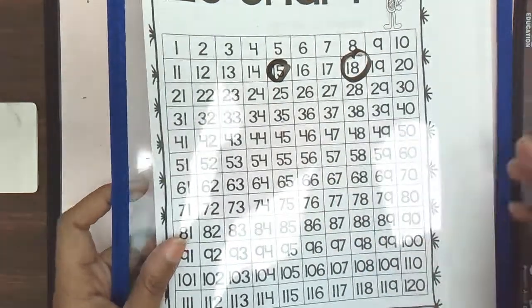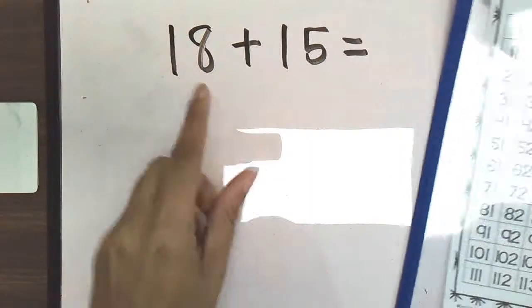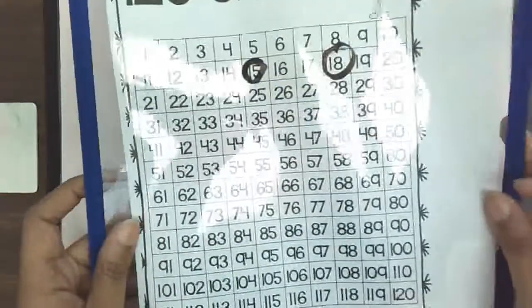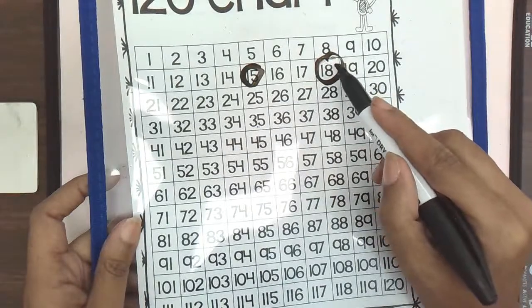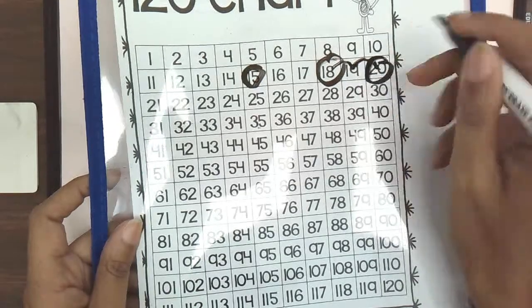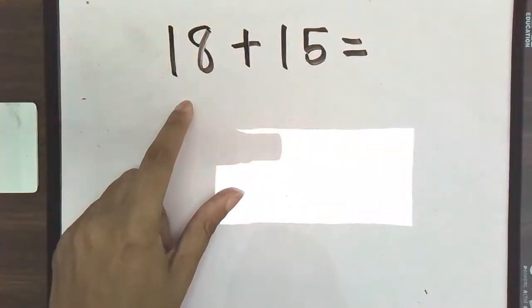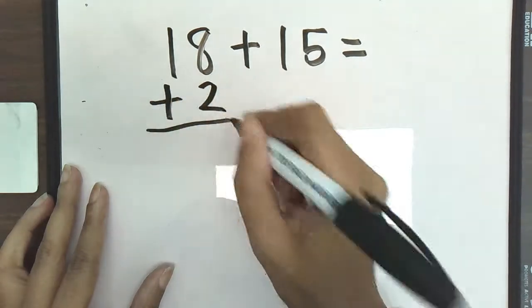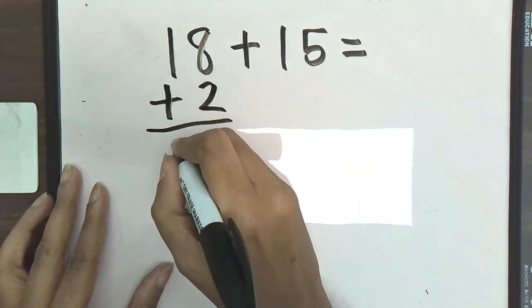So 18 is going to be the closest number to a 10. So 18, what do we have to add to 18 to get us to a 10? Well, if I find 18 on my 120s chart, I see that I have to make one jump, two jumps to get me to a 10. So what I'm going to do here is I'm going to add two underneath my 18 to get me to a 10.